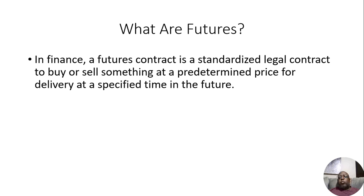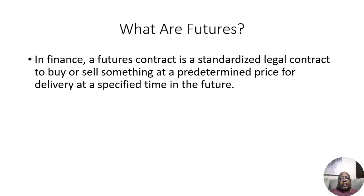One warning with futures: commodities are real things — gold, cattle, all this type of stuff. If you have a futures contract, you have to make sure to close it before it expires. You don't want them delivering you a whole bunch of cattle. But in any event, that's what a futures contract is — a standardized legal contract to buy or sell something at a predetermined price for delivery at a specified time in the future.